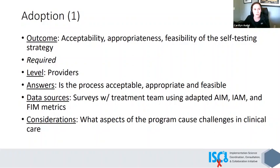Then we shift to adoption, which is very important particularly in the pilot phase to make sure that the acceptability, appropriateness, and feasibility of this strategy for increasing testing is possible in these three different facilities. This is more at the level of the providers. It answers the question: is this strategy acceptable, appropriate, and feasible? We would do surveys with the treatment team using adapted acceptability, appropriateness, and feasibility metrics using the Weiner scales, and get a sense of what aspects of the program could potentially cause challenges in clinical care.